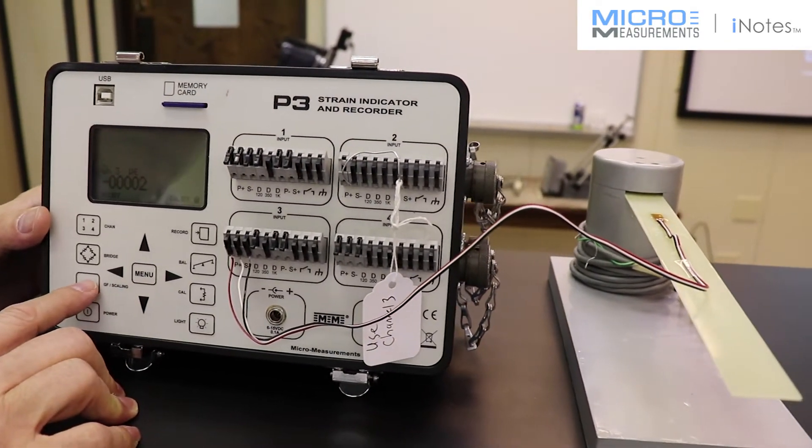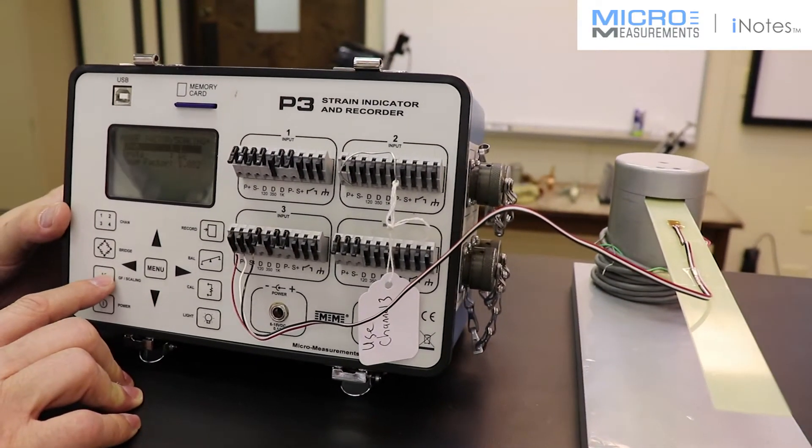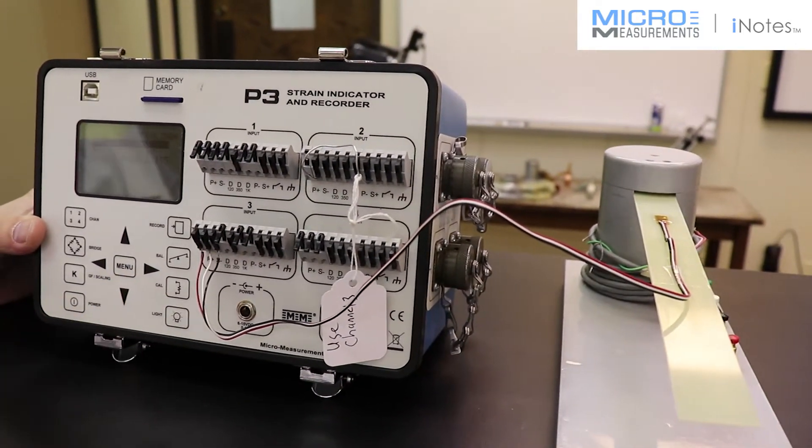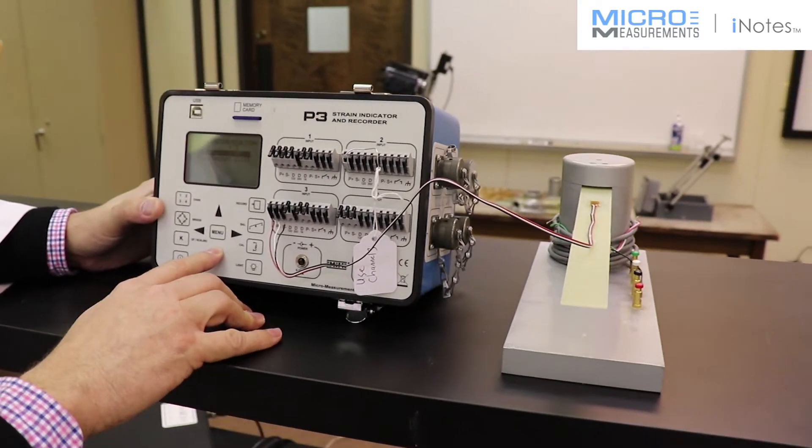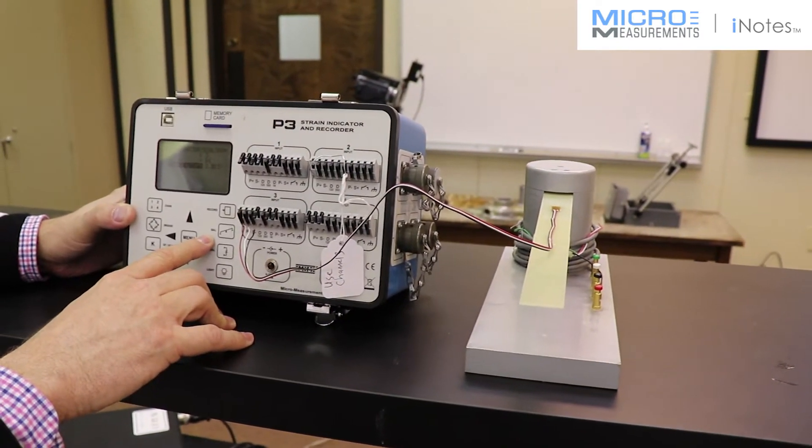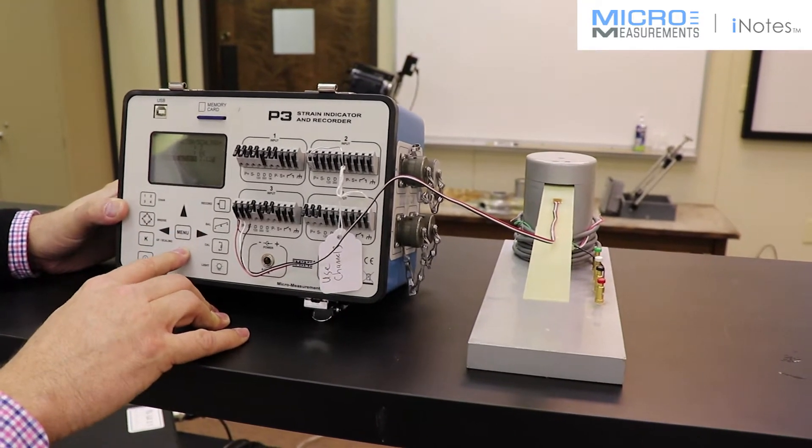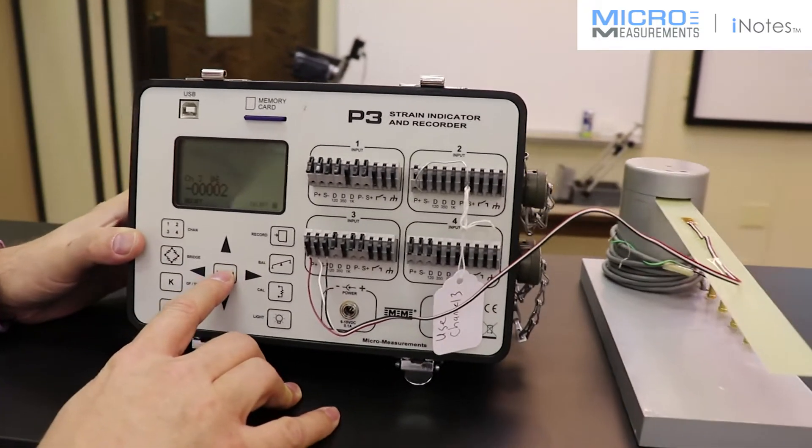The next step is to set the gauge factor for the strain gauge. Let's go to channel 3, 2.120. I'll just arrow down, go up, over, and menu to get back out of it.